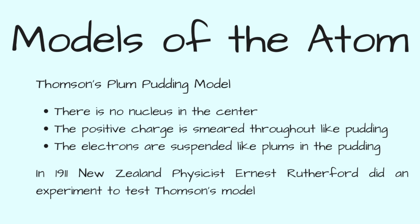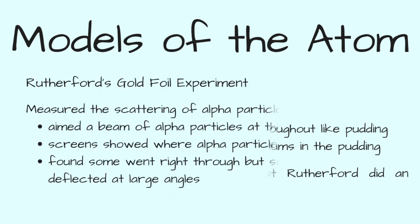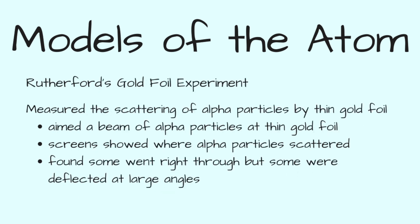In 1911, New Zealand physicist Ernest Rutherford and his students Hans Geiger and Ernest Marsden did an experiment to test Thomson's model. This experiment was called the gold foil experiment. In this experiment, Rutherford measured the scattering of alpha particles — these are helium nuclei — by thin gold foil. A beam of alpha particles was aimed at the thin gold foil, screens were placed all around the foil, and they showed that the alpha particles were scattered.